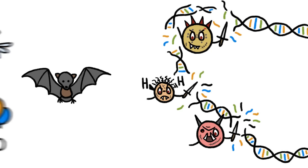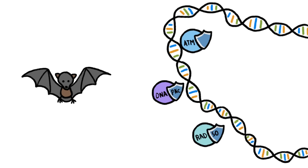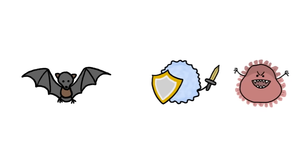So when our bat cousins took to the air, they leveled up their in-flight DNA damage repair kits and other defenses, including specialized cells that keep viral invaders in check.